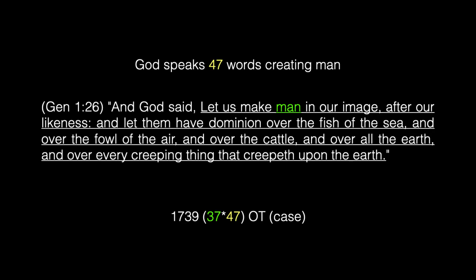Let's go to Genesis 1:26: 'And God said, Let us make man in our image after our likeness and let them have dominion over the fish of the sea and over the fowl of the air and over the cattle and over all the earth and over every creeping thing that creepeth upon the earth.' Here God speaks 47 words. The word 'man' — case sensitive as it occurs in this verse — appears 1,739 times in the Old Testament of the King James Bible. The word 'image' occurs exactly 74 times in the Old Testament — the value of the name Jesus.